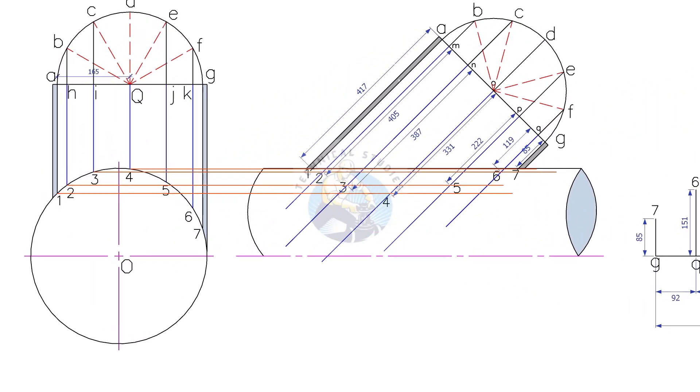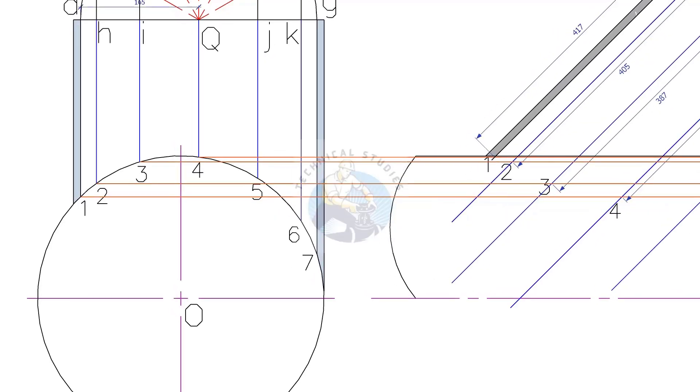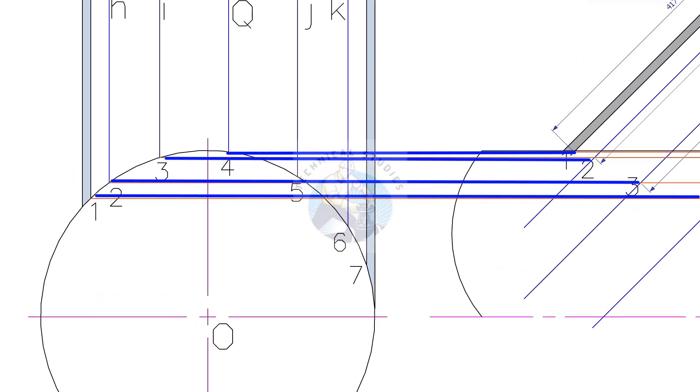Draw parallel lines from intersections 4, 3, 2 and 1 to the side view as shown.